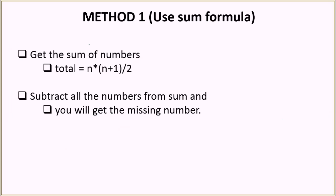Let's look at the first solution. Method 1 will be using the sum formula. We know that the sum of first n natural numbers is n into n plus 1 by 2. So we will be using this formula. In the first step of this algorithm we calculate the total value as n into n plus 1 by 2. And then we subtract all the elements of the current array one by one from this sum value. After you have subtracted all the elements of the array from this value, you will only be left with the missing number.